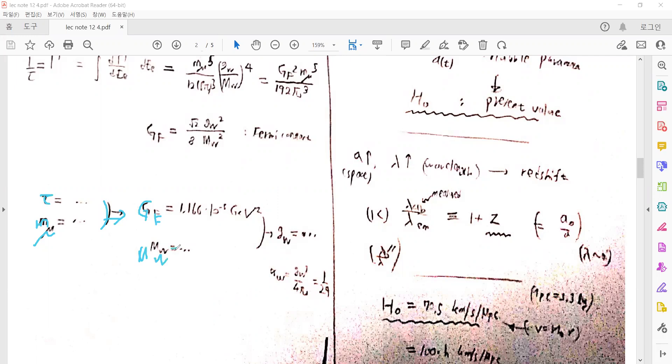We can calculate the lifetime of the muon. We know the mass of the muon from experiment, so we can obtain the Fermi constant. We know the W boson mass from other experiments, and we can calculate the coupling constant of the weak interaction, which is around 1/29. This is comparable to the coupling constant in QED, but because of the large W boson mass, the Fermi constant is very small, and the weak interaction becomes very weak in strength.